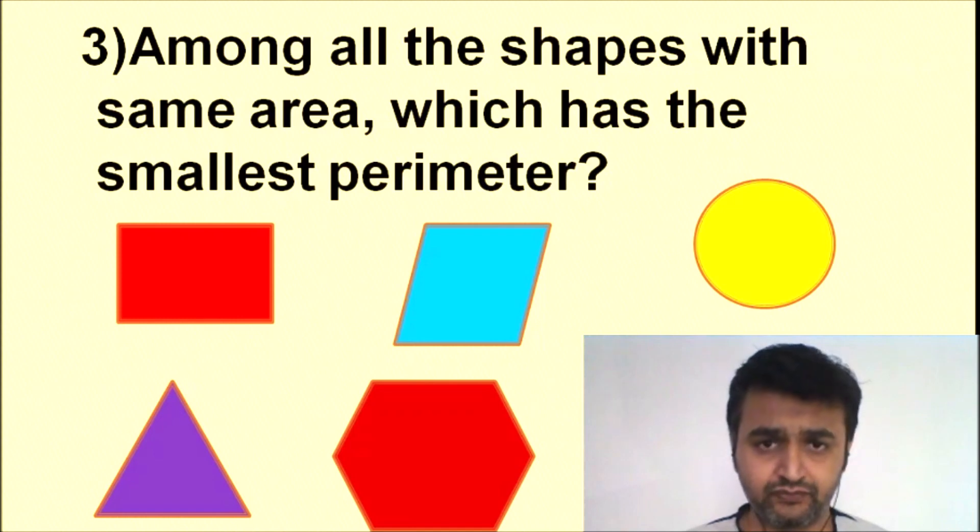If they all have the same area, then circle is the one which will have the smallest perimeter. Now the answer is easy - the answer is circle - but if you try to prove it, you really need some very good mathematics for that.